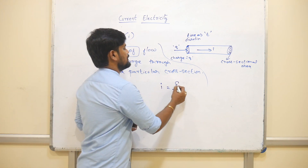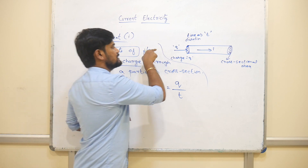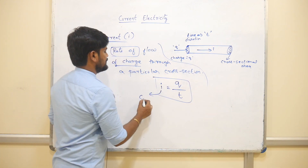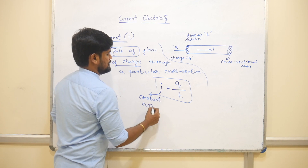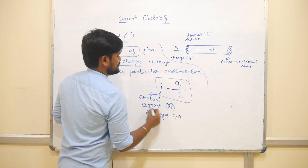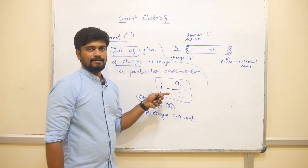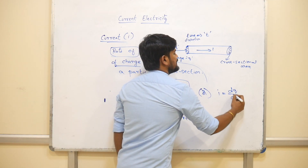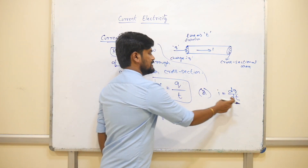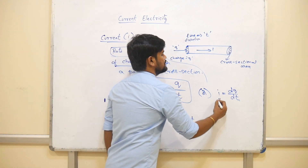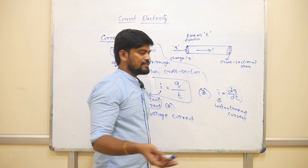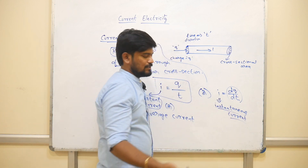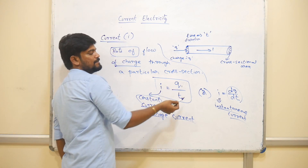So current equals charge divided by time. For constant or average current, the simple formula is I = Q/T. For instantaneous current, you use differentiation: I = dQ/dt, where dQ is the small charge and dt is the small time interval.